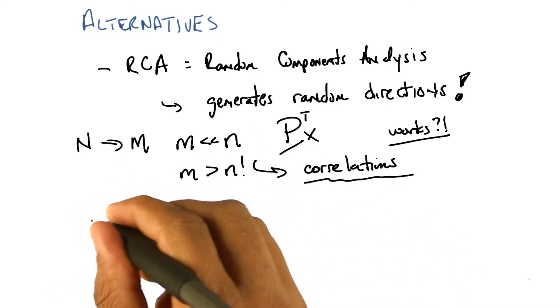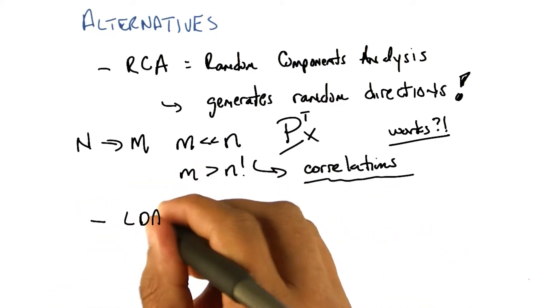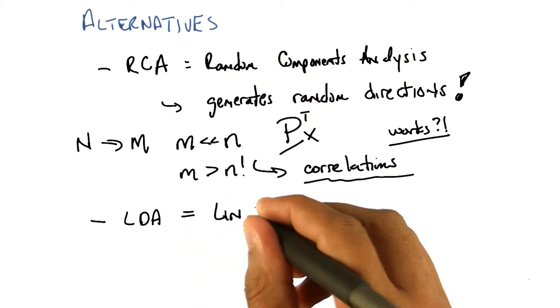The second alternative I just wanted to mention very briefly is something called LDA, which is short for linear discriminant analysis.